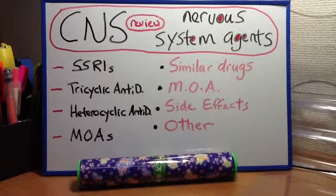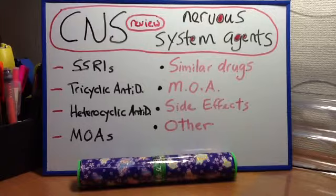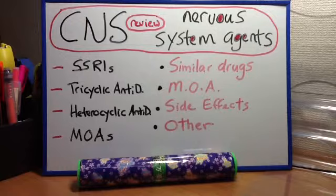It is time for a review of the CNS Nervous System Agents. We're going to go through a very quick review, naming the main points from the Lange Pharmacology cards. First, selective serotonin reuptake inhibitors.